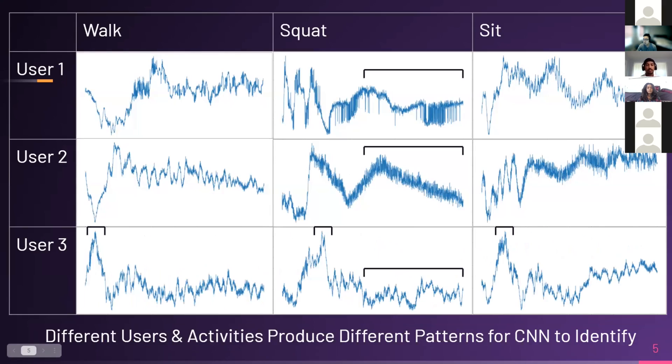Here are a couple examples of some user segmentations of three users of three activities. What I have bracketed off are just some trends that the computer might notice, such as for user three, there's a sudden peak in the beginning, or for squatting there's a lot of abnormal fluctuations at the end of our two-second time window. The general takeaway from this slide is that different users and different activities can produce different patterns for CNN to identify.